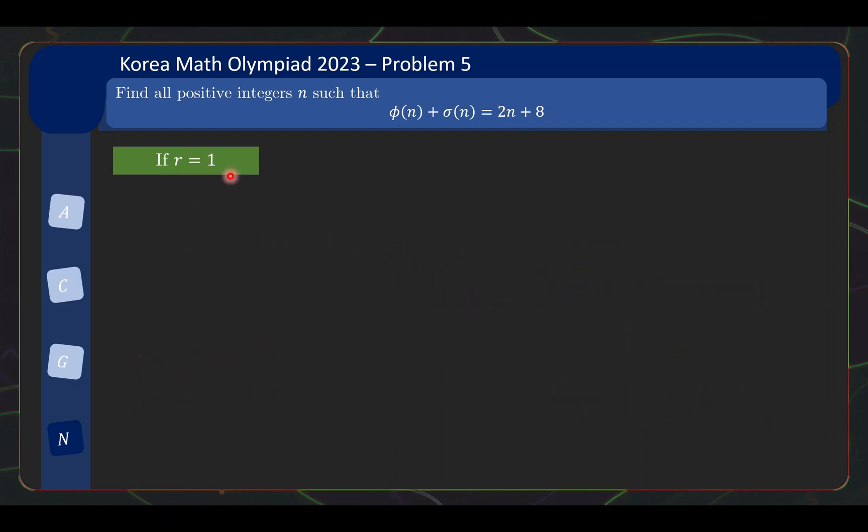And now, finally, r equals 1, this is the easy case. We let n equals p^a, and we just directly write out the formula for φ(n), directly write out the expression for σ(n), and if we add the two together, this part cancels the 2n, this cancels this. We have the remaining p^(a-2) + ... + 1 equals 8. And you can very quickly check that the only possible solution is 7 + 1 equals 8, which implies that p is 7, a is 3, so n equals 7³, which is 343.